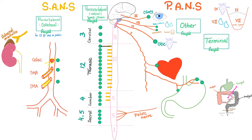Every preganglionic fiber secretes acetylcholine. However, postganglionic sympathetic fibers secrete norepinephrine — they never secrete epinephrine. So how about epinephrine?